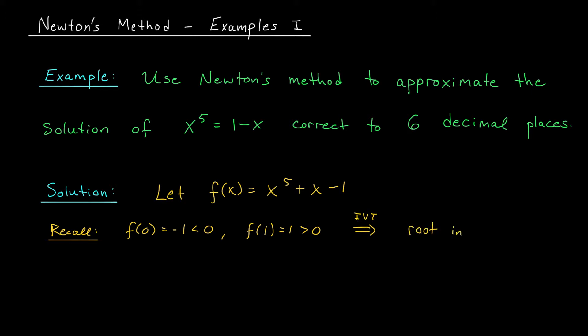If we wanted to hone in on that root a little bit more closely, we could use the bisection method here. But I think using a guess in the interval 0, 1 will likely be fine. So just like in the overview, I'm going to set my initial guess x naught equal to 1.